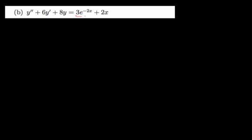This is question 1b. We are told to find the general solution of this non-homogeneous differential equation. We know it's non-homogeneous because the right-hand side does not equal zero. To find the general solution, we know it should be of the form y equals yc plus yp.